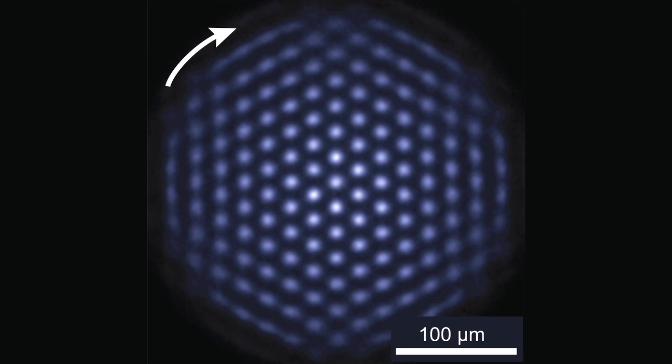The Penning trap simulator confines about 350 trapped beryllium ions, and they're confined using a combination of static electric and magnetic fields.